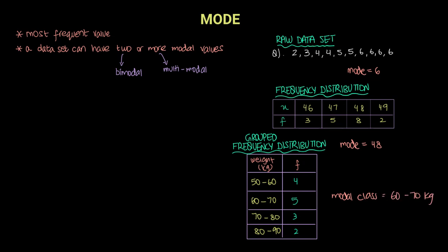This is how we calculate the mode for raw data, for a frequency distribution, and for a grouped frequency distribution.